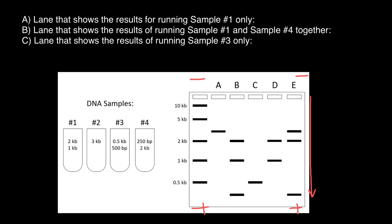Now let's check the first question. Lane that shows the results for running sample one only. Here's sample number one. We expect in a lane to find two bands, one kilobase and another one two kilobase. Let's check these lanes. Only one band here, so this is not our variant. Here are three bands and we're looking for two bands, so also not our variant.